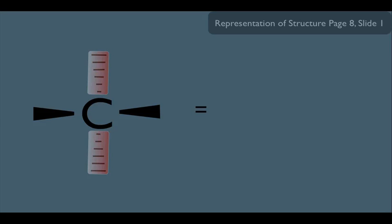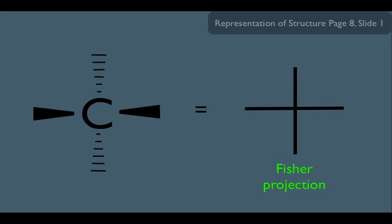And later on, what we're going to be doing is representing this molecule as just simple crosses like this. And the cross is called a Fischer projection. We'll talk about this projection in more detail in another online lecture.